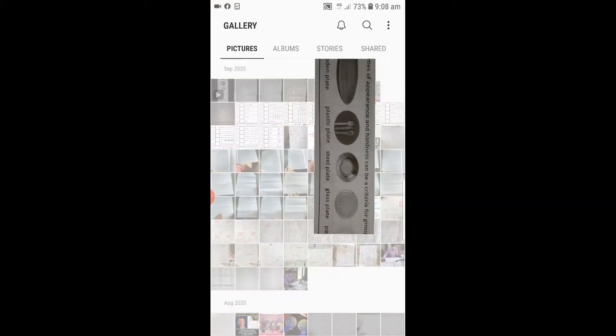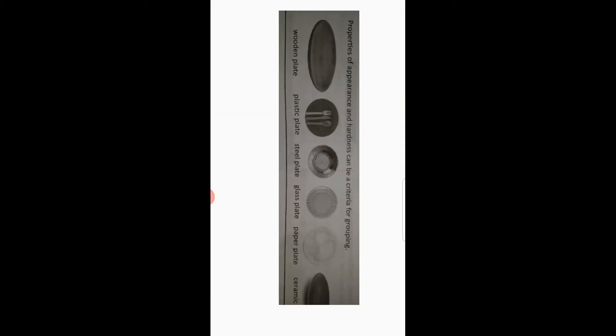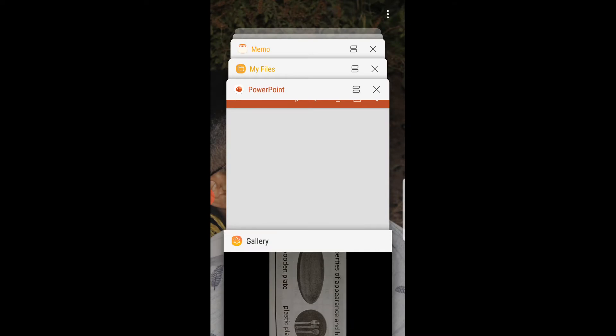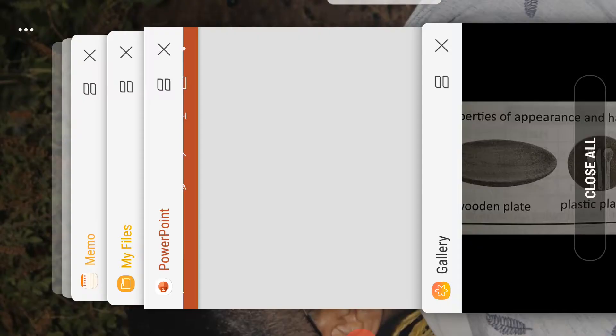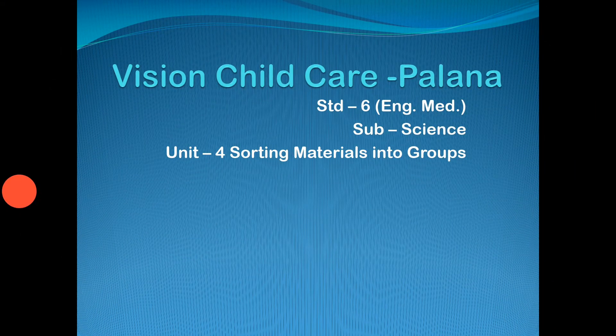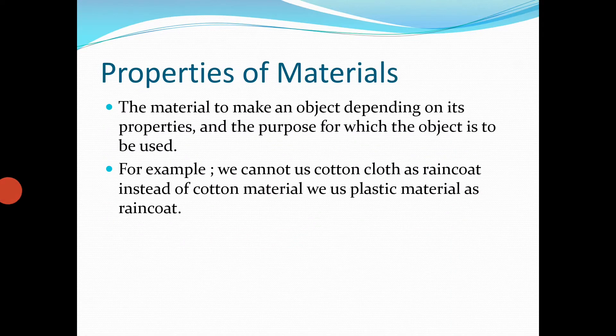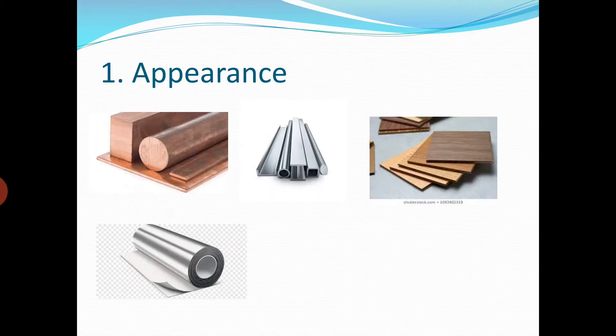Now this material — the plate — is one example we took. Like that, we are also going to do an experiment on soluble and insoluble substances. So let us start with soluble and insoluble substances.